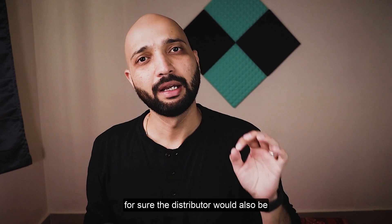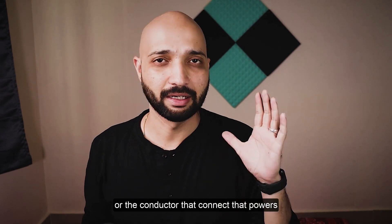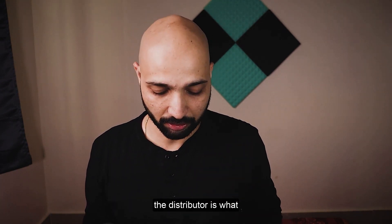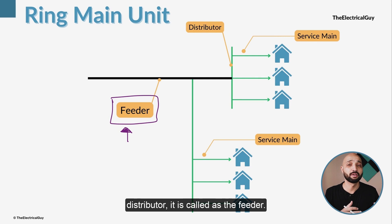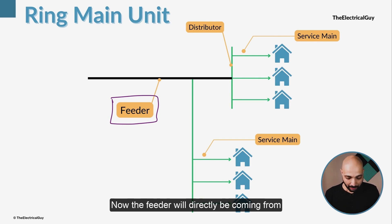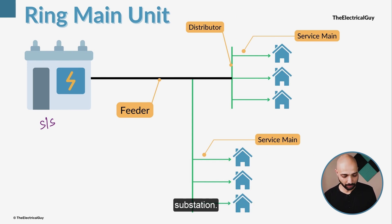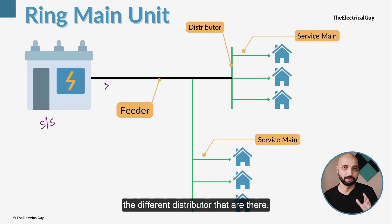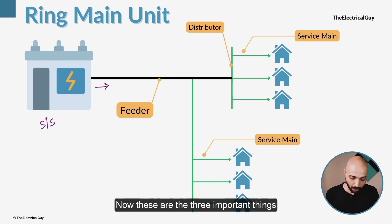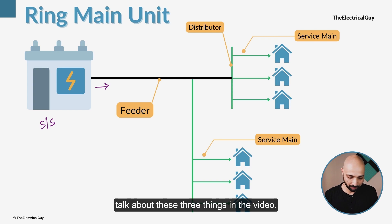The distributor also gets power from somewhere. The cable or conductor that powers the distributor is what we call the feeder — since it is feeding power to different distributors. The feeder comes directly from a distribution substation. So the three important terms are: feeder, distributor, and service main.